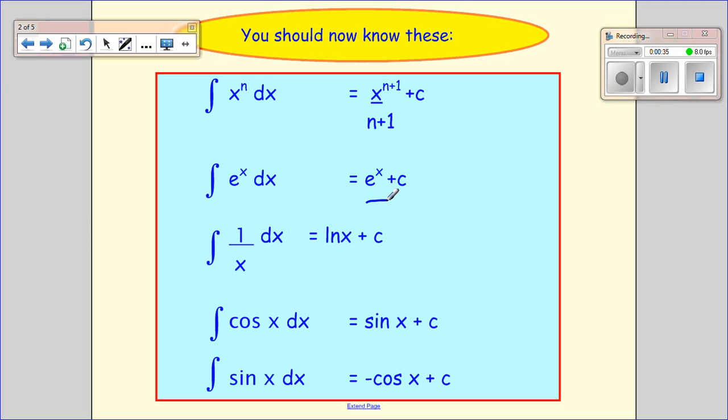When we integrate 1 over x, we get ln x because when we differentiate ln x, we get 1 over x.